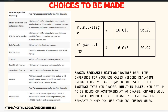Amazon SageMaker hosting provides real-time inference based on the instance types shown above. It also has built-in rules — you can allow rules to be monitored for 30 hours for free, after which they will be charged. This video is not about setting up SageMaker or understanding the SageMaker environment in depth; it is about using SageMaker and getting the inference endpoint.